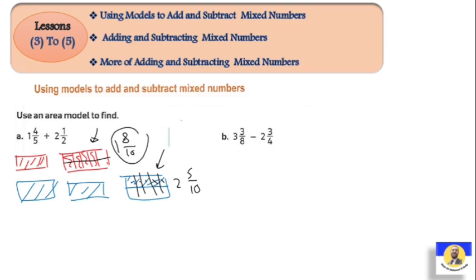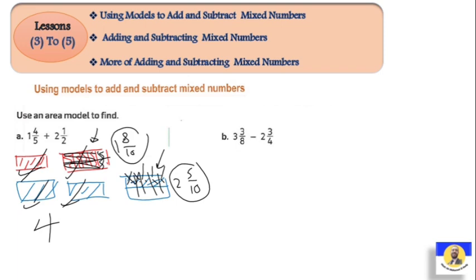Now we need to add these two mixed numbers. Using the models: one, two, three - we have three complete shapes already. We can see eight parts colored. We need to complete to nine, ten - we take one, two from the next shape. So we now have four complete shapes, with three parts remaining out of ten. The answer is four and three over ten.